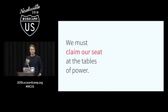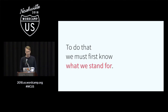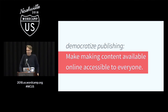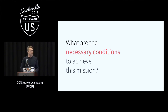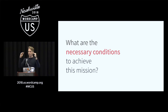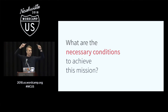We are at the point where we need to claim our seat at every table where a decision is made, because we have an obligation to represent the people affected by WordPress. And the people affected by WordPress is not just the 99% who are not here today — it is actually every user of the web. Because when we make decisions on WordPress, we are making decisions on behalf of the web. But to do that, we must first know what we stand for. Democratize publishing — that's what we stand for. But what are the necessary conditions for us to be able to democratize publishing?